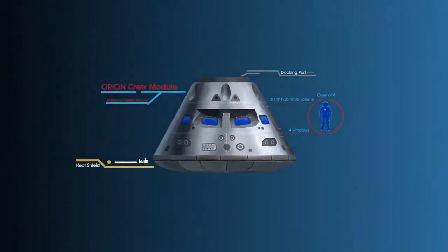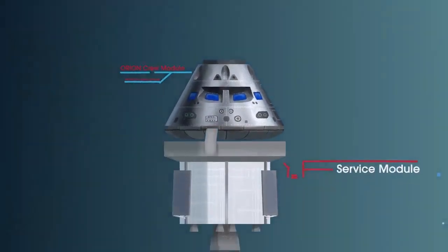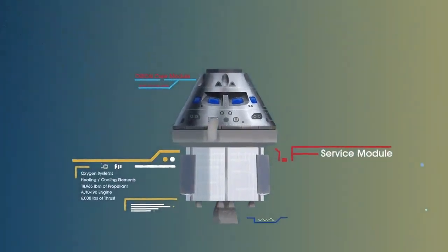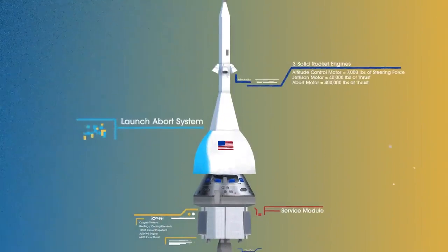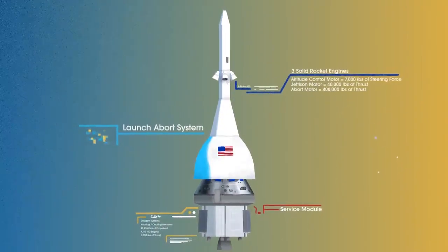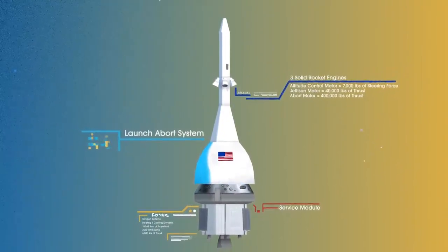The crew module, where up to four astronauts will live and work throughout the flight. The service module, with life-support systems for the crew and its own engine and fuel reserves, and a launch abort system, with engines capable of pulling the crew module to safety during launch should anything go wrong.